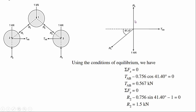Taking summation of Fy equal to zero: R2 acts upward (positive), minus R1 sin 41.4 degrees (downward component), minus one kilonewton equals zero. Solving this equation gives R2 equal to 1.5 kilonewtons.